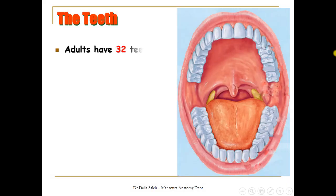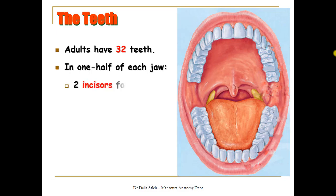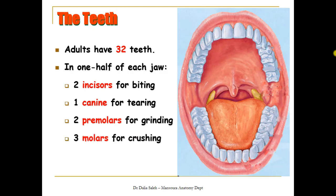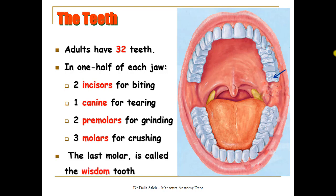For the teeth, adults have 32 teeth. In each half of each row, we have two incisors — central and lateral — one canine, two premolars (first and second), and three molars for crushing — first, second, and third. The third molar is called the wisdom tooth.